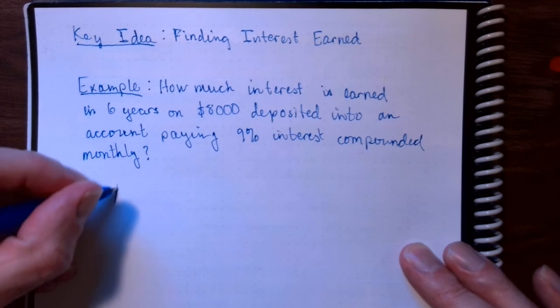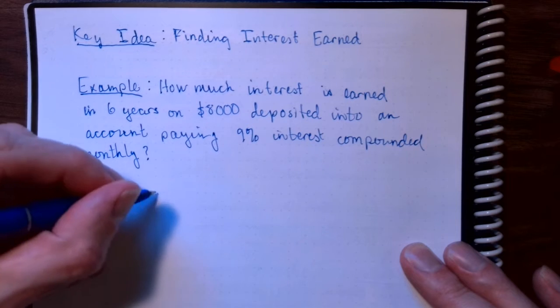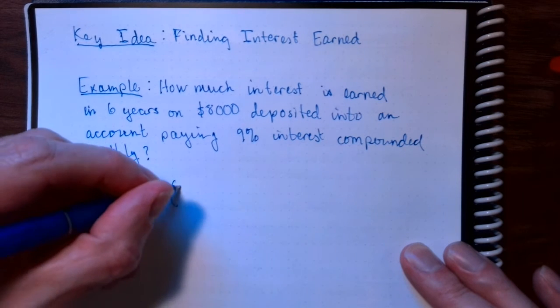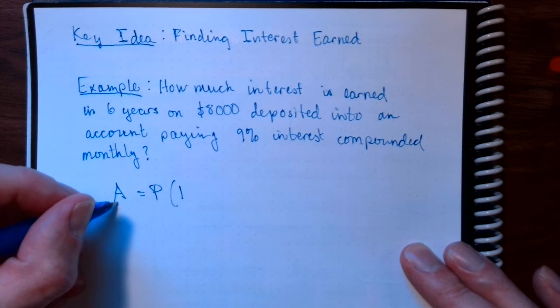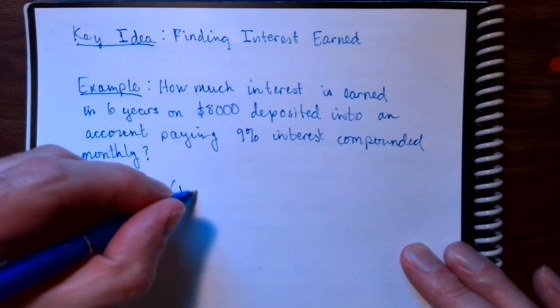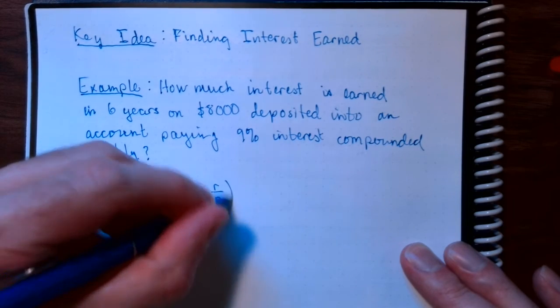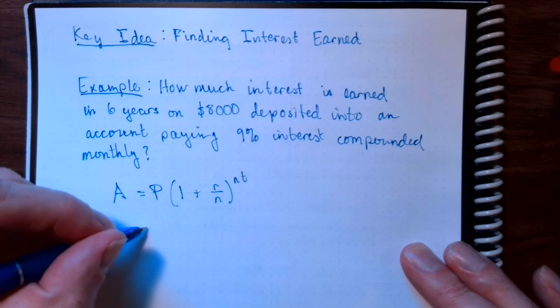Well, from previous videos we know this. The amount we end up with is principal times 1 plus r over n, to the power nt.